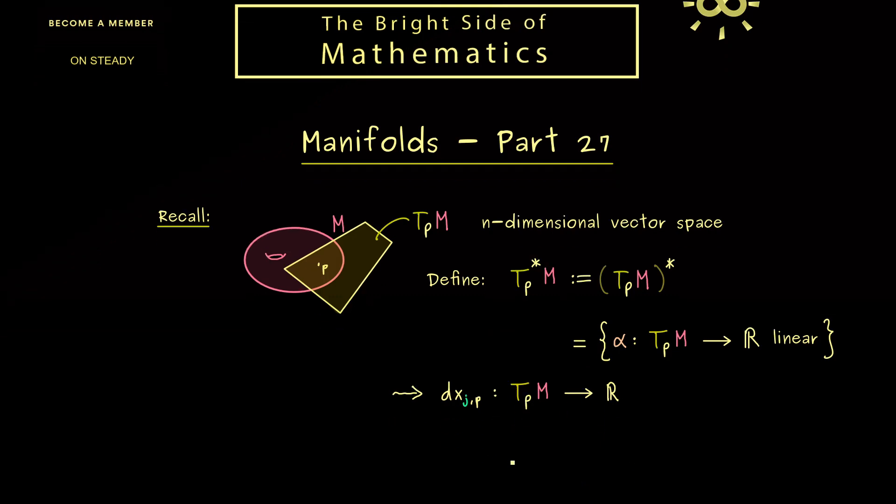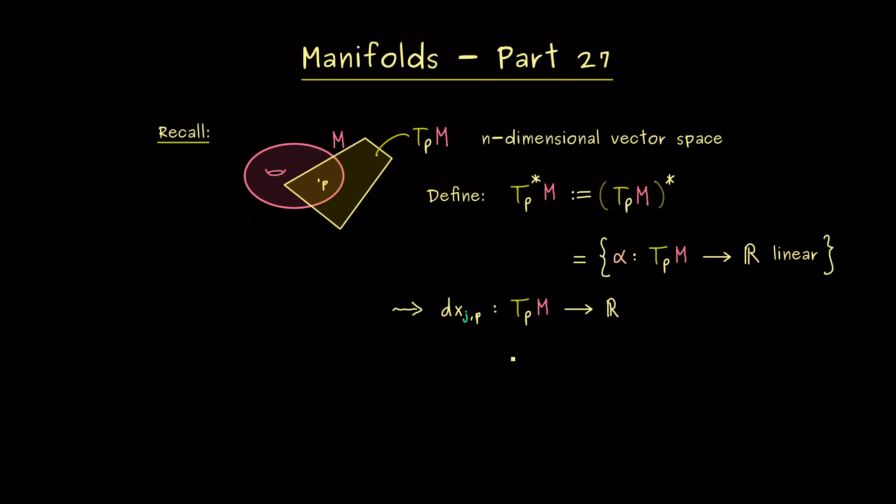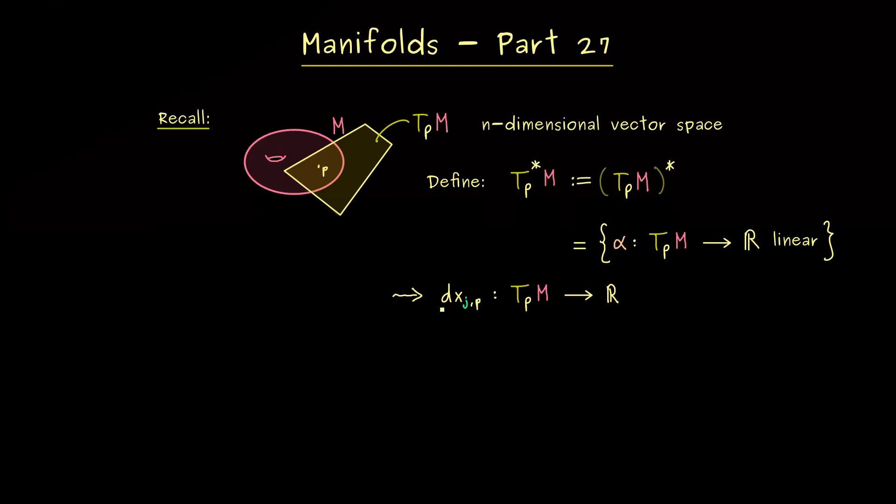And if we want to be more precise with this object, we also have to put the point p into the name. And then this gives us a linear map from T_pM into the real number line R. More precisely, you should recall that we can use the coordinate basis of T_pM for the definition of dxj. In fact, just put del_k as a tangent vector into the map, and by definition, the result should be the Kronecker delta.